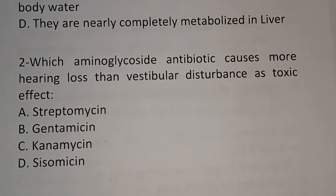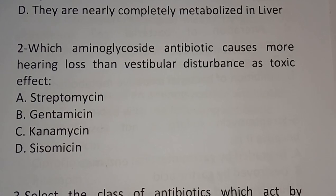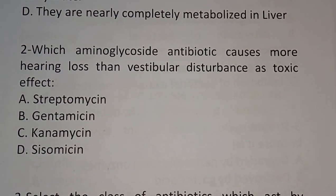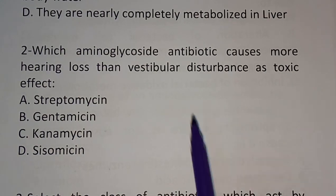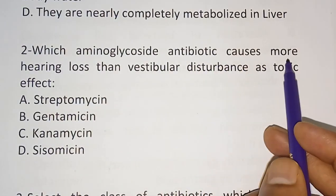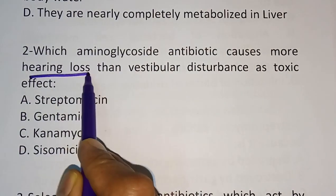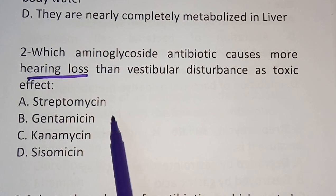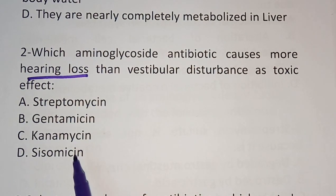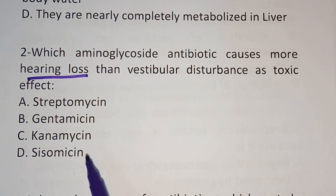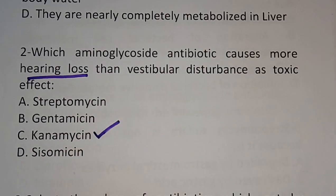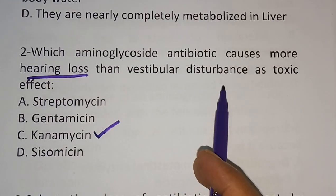Question 2: Which Aminoglycoside Antibiotic causes more hearing loss than vestibular disturbances or toxic effects? Option A: Streptomycin. Option B: Gentamicin. Option C: Kanamycin. Option D: Sisomycin. The correct answer is Option C, Kanamycin — it causes more hearing loss than vestibular disturbances.